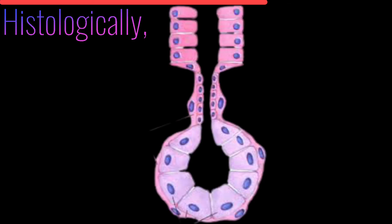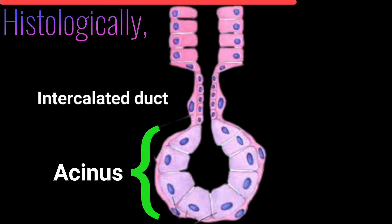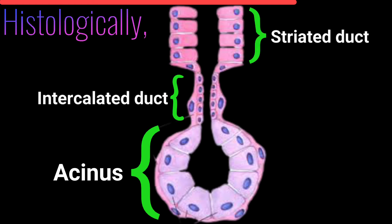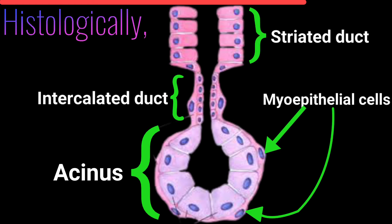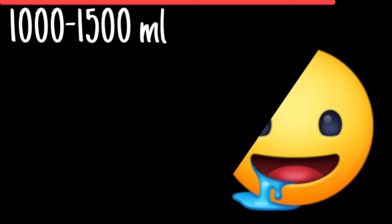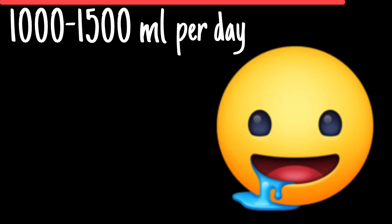Histologically, the secretory unit of the salivary gland is composed of acinus, intercalated ducts, striated ducts, and myoepithelial cells. About 1000–1500 ml of saliva is secreted per day.